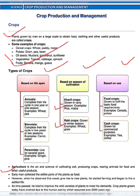Now, agriculture. It is the art and science of cultivating soil, producing crops, and rearing animals for food and other useful products. If we talk about early men, they collected the edible parts of plants as food. However, when he observed that seeds give rise to new plants, he started farming and began to live a settled life. As time passed, he tried to improve the wild varieties of plants to meet his demand. Crops grown today have evolved due to this human activity which occurred over 2000 years ago.